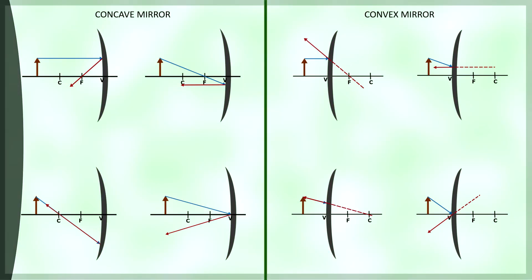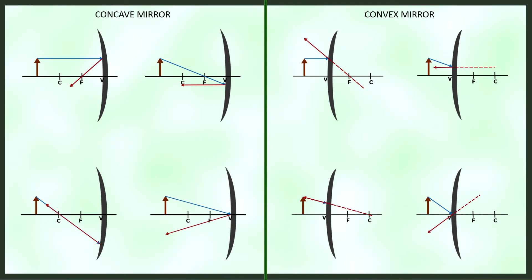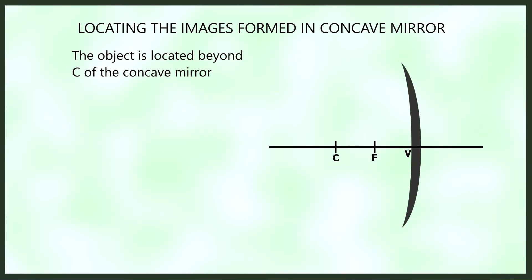We can choose any two rays out of these four principal rays when locating the image, since we only need two reflected rays to meet. For the concave mirror with the object placed beyond C, I will use the PF ray and CC ray. We draw an incident light ray from the object parallel to the principal axis, which is reflected passing through the focus. Then a ray passing through the center of curvature reflects back along its own path. The reflected rays meet somewhere between the center of curvature and the focus, and the meeting point is below the principal axis, which denotes that the image is inverted.